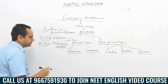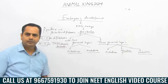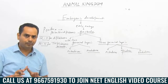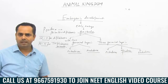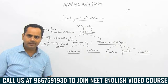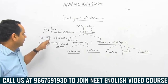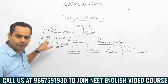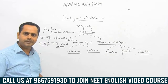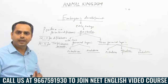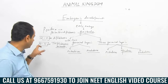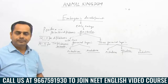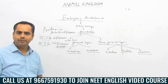Remember: depending upon the germ layer, poriferans are called primitive diploblastic, but they are not true diploblastic animals. True diploblastic animals are only the second and third phyla — that is, Coelentrata and Ctenophora. After that, all phyla are categorized under triploblastic animals, starting from Platyhelminthes to Chordata.